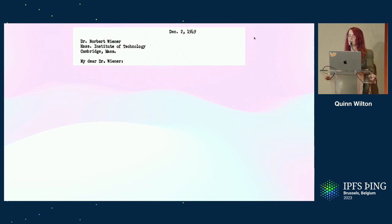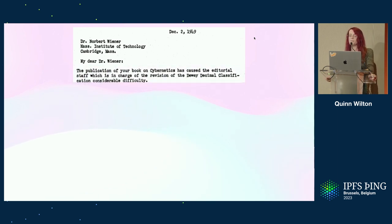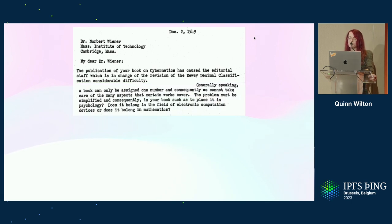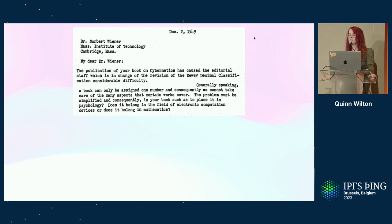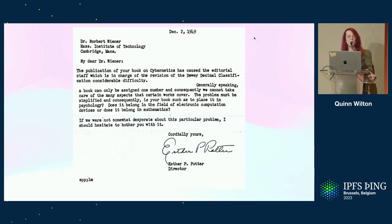I'm reminded of a letter sent by the Library of Congress to Dr. Norbert Wiener in 1949: 'My dear Dr. Wiener, the publication of your book on cybernetics has caused the editorial staff in charge of the revision of the Dewey Decimal Classification considerable difficulty. Generally speaking, a book can only be assigned one number, and consequently we cannot take care of the many aspects that certain works cover. The problem must be simplified. Is your book such as to place it in psychology? Does it belong in the field of electronic computation devices? Or does it belong in mathematics? If we were not somewhat desperate about this particular problem, I should hesitate to bother you with it.'